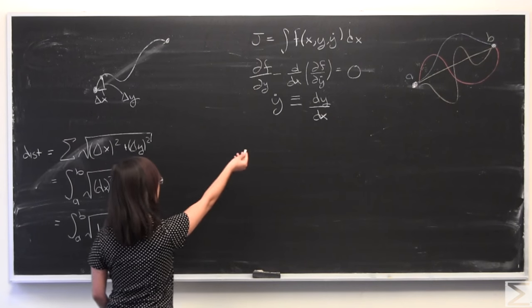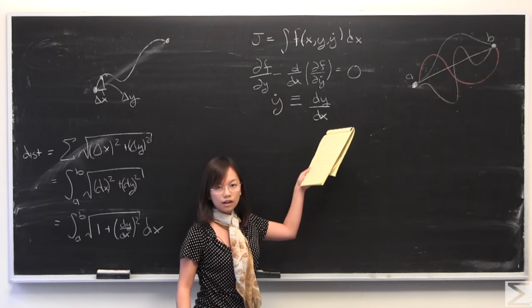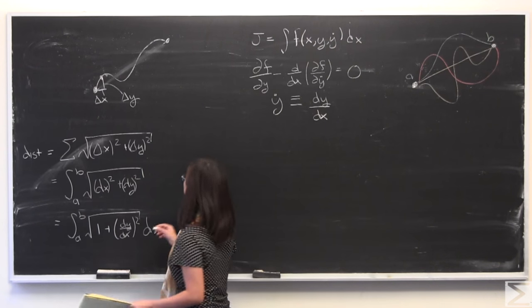Well, as you see earlier, we've defined this y dot as dy over dx, the total derivative. I'm going to rewrite this.